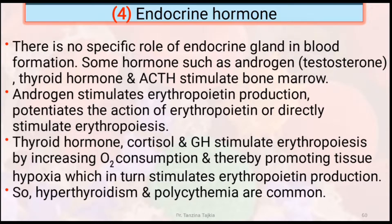Fourthly, endocrine hormones. There is no specific role of endocrine glands in blood formation, but some hormones such as androgen (testosterone), thyroid hormone, and ACTH stimulate the bone marrow. Androgen stimulates erythropoietin production. Thyroid hormone, cortisol, and growth hormone stimulate erythropoietin by increasing oxygen consumption, thereby promoting tissue hypoxia, which in turn stimulates erythropoietin production.